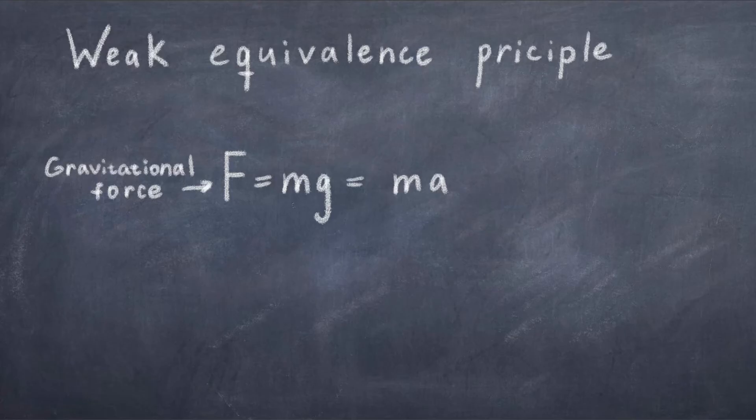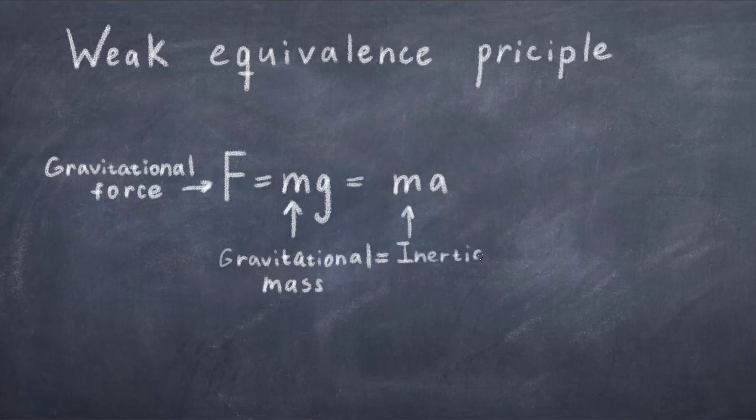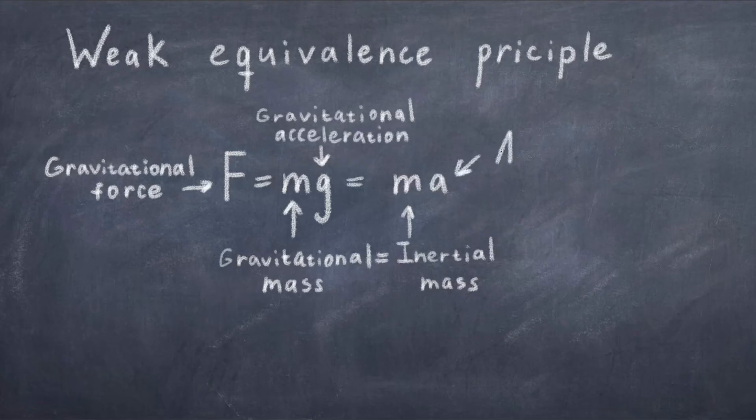Many experiments have been done to show that the acceleration of falling objects is the same regardless of the mass, thus leading to one of the key concepts of general relativity called the weak equivalence principle, which states that the inertial and gravitational mass are the same indeed. This is convenient because if you have to go to the bathroom scale, you will measure the gravitational mass, and then using Newton's second law would be much harder if it wasn't the same as the inertial mass.